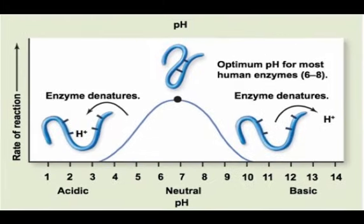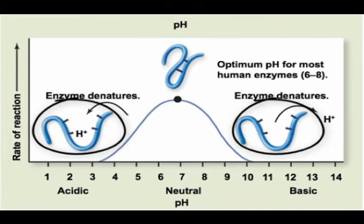This change in the amount of hydrogen ions attached to the enzyme disrupts the bonds that hold the enzyme protein in its shape. If this change is significant, it can cause denaturation of the enzyme protein.